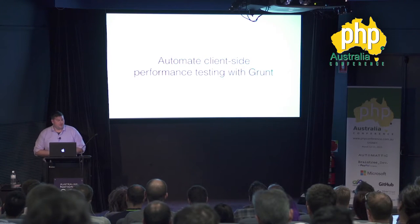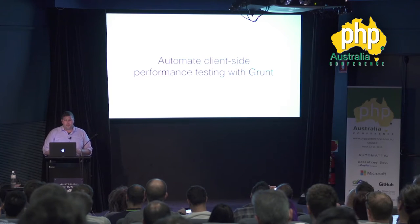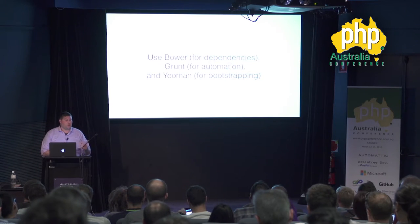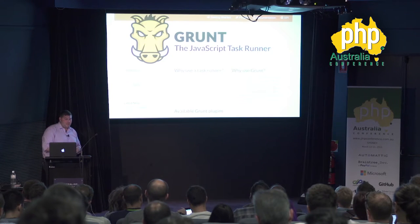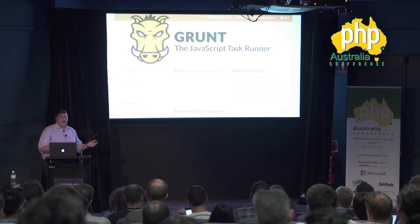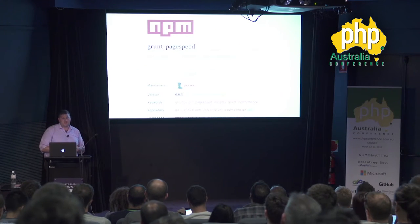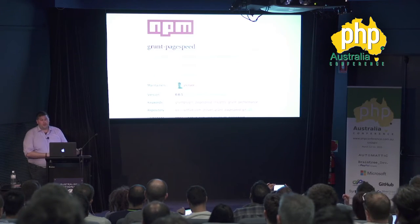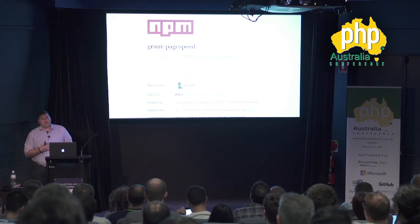You should automate client-side performance testing with Grunt or Gulp. Use Bower to manage front-end dependencies and Yeoman for bootstrapping applications with best practices built in. Grunt has a great ecosystem of plugins, including Grunt PageSpeed. You can 'npm install grunt-pagespeed' and automatically run PageSpeed analysis every time you do a new deploy or build.